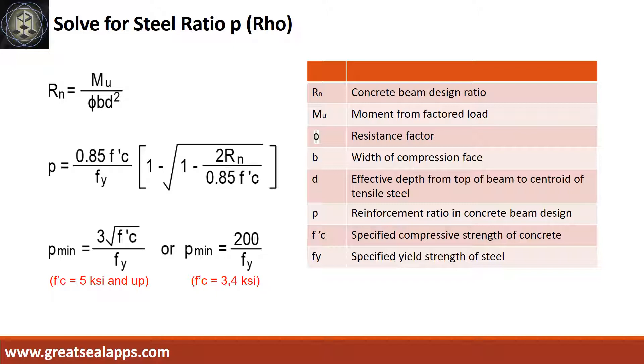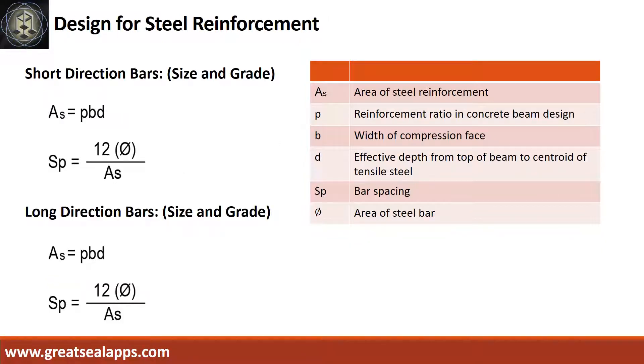Solve for concrete beam design ratio RN and reinforcement ratio rho for all the corresponding moments. Solve and check each for minimum rho required by ACI code. Solve the area of steel and equivalent bar spacing corresponding to short and long direction bars.